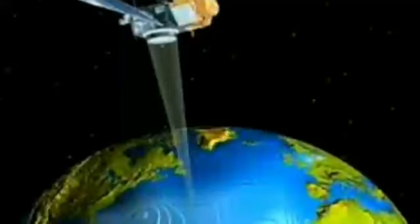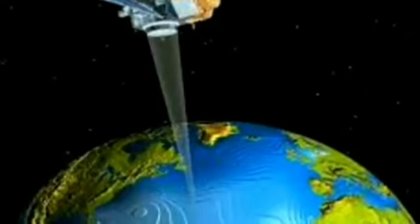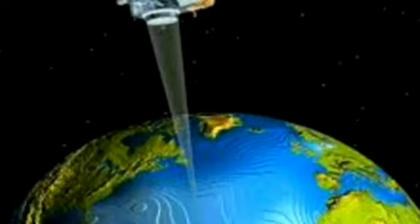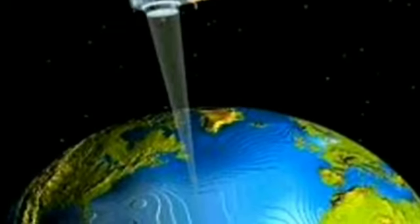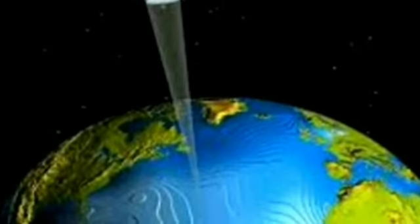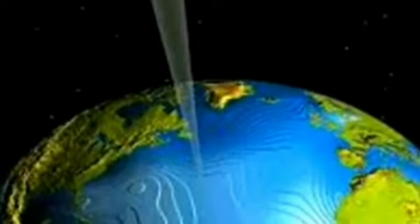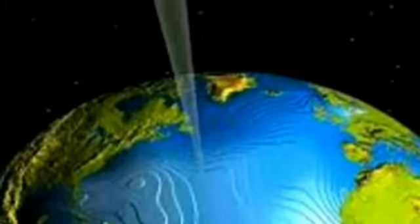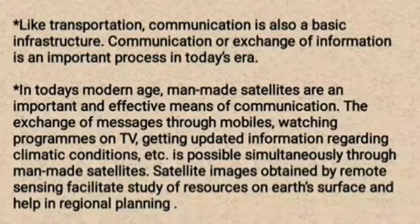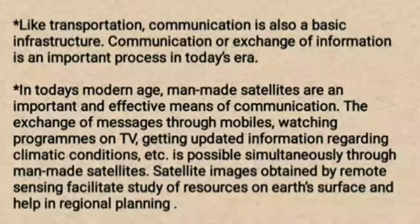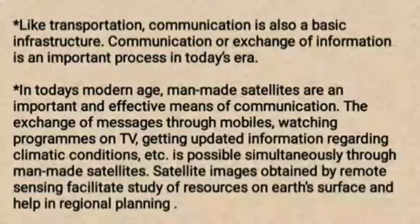In remote sensing, information regarding the Earth's surface is obtained through aerial photography or satellite sensors. Such information is used to study natural resources, and images are taken to study resources on the Earth's surface, helping in regional planning. In today's age of internet and social media, man-made satellites are indispensable. Mobile phones, internet facilities, and social media have become an important part of our life.